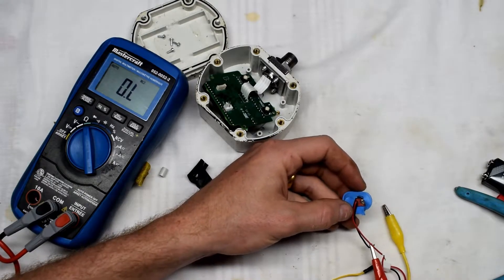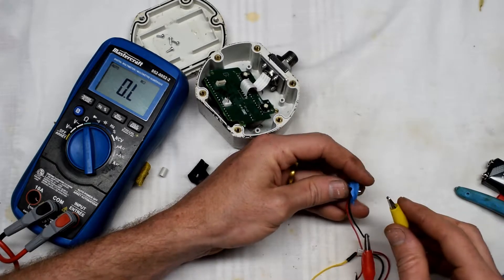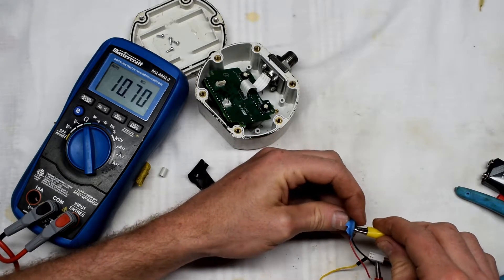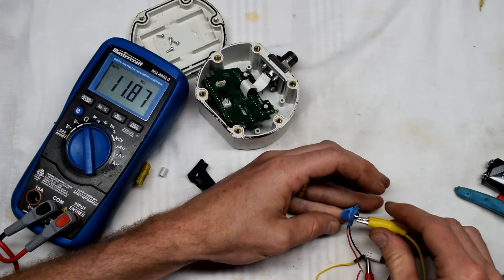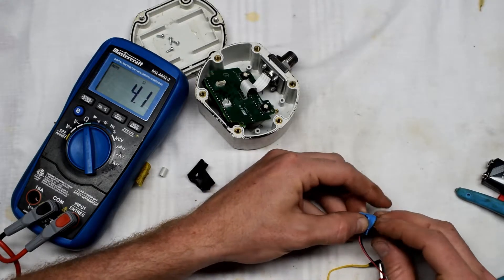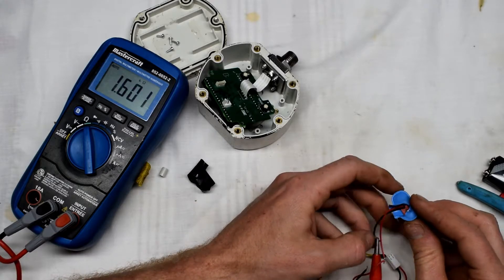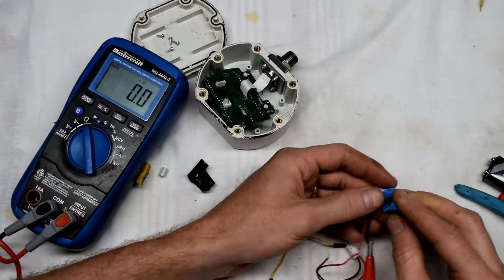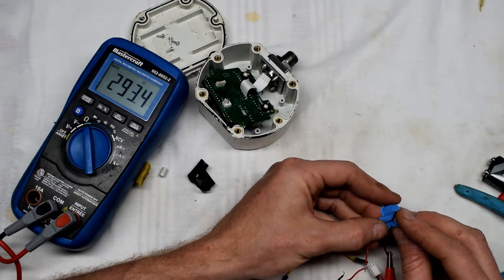I used some alligator clips to connect to the negative side of the battery connector, then put the other side to my multimeter so I can see what happens with the resistance. You can see I'm measuring about 60 ohms.